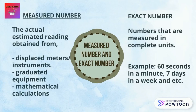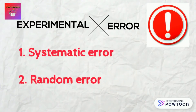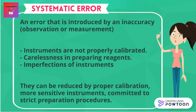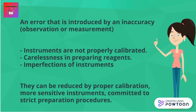Exact numbers are called exact values because they are measured in complete units — for example, 60 seconds in a minute or 7 days in a week. Next, we'll learn about types of experimental errors. There are two types: systematic error and random error. Systematic error is introduced by inaccuracy in observation or measurement. Causes include instruments not properly calibrated, carelessness in preparing reagents, and imperfections of instruments. Systematic errors can be reduced by proper calibration, using more sensitive instruments, and following strict preparation procedures.